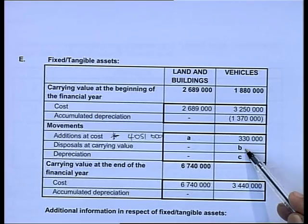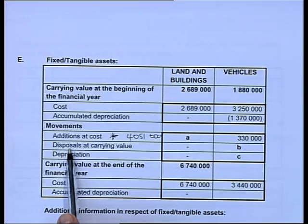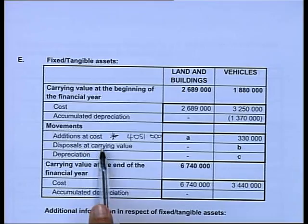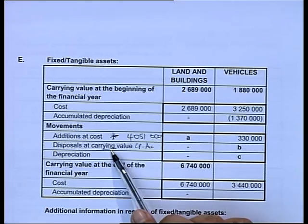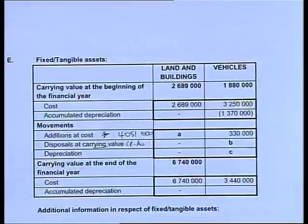Now let's look at the next part. Letter B refers to the disposal at carrying value. This is very important - the carrying value means the cost price minus the accumulated depreciation of the item that we are selling.